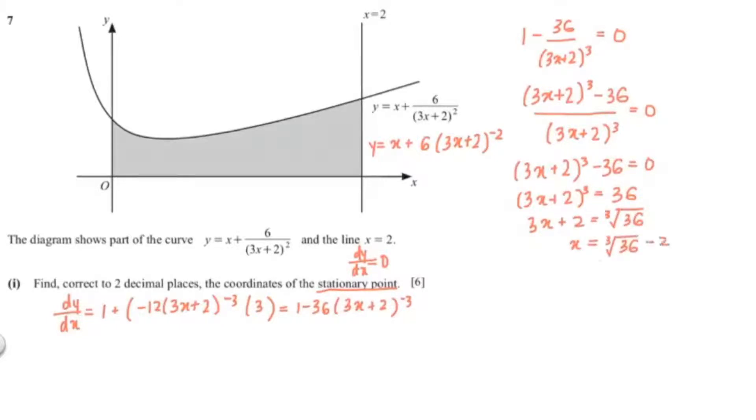So our x would be the cube root of 36 minus 2 over 3. Now I'll put that into my calculator and that would give me 0.434, but since the question is asking us to round it to two decimal places, it would be 0.43.